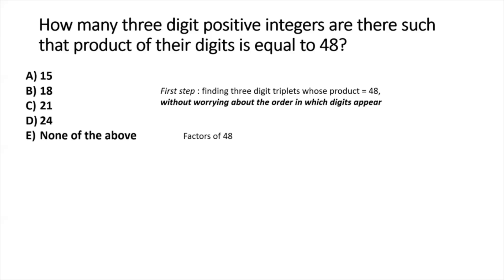We list the prime factors of 48, including repeated factors — for example, there are four 2s and one 3. We also include 1, because anything multiplied by 1 doesn't change the product, but 1 could be a valid digit in a three-digit number, so we need to consider it.